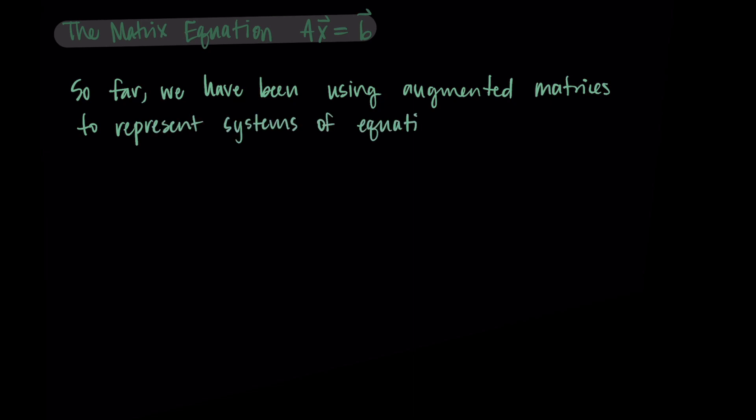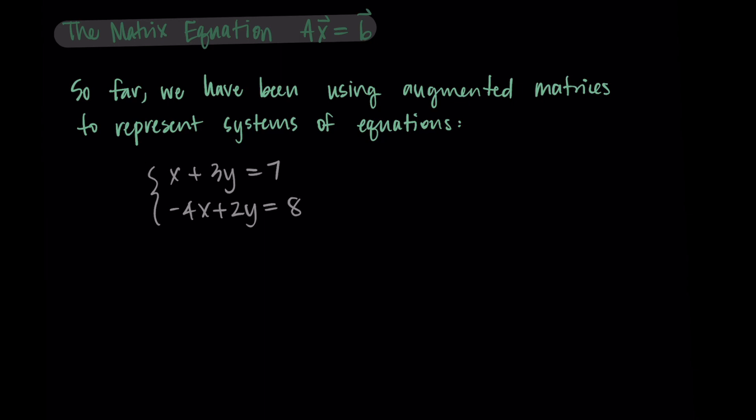So we've had a system that maybe looks like x plus 3y equals 7 and then negative 4x plus 2y equals 8. So this would be a system of two linear equations.